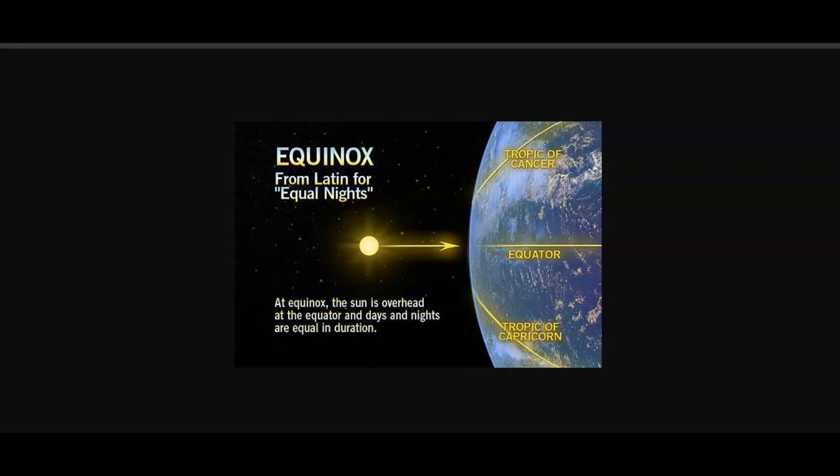What the globers do is they presuppose a sphere or a globe and then they claim outlandish things such as the sun rising due east and setting due west. What you have to understand is due east and due west are conceptual.